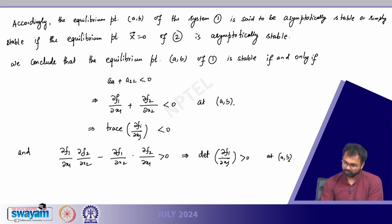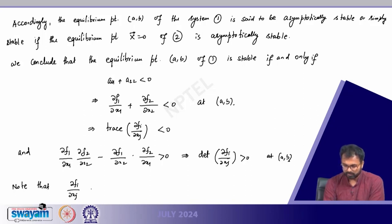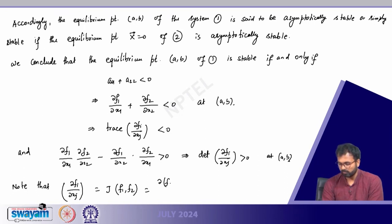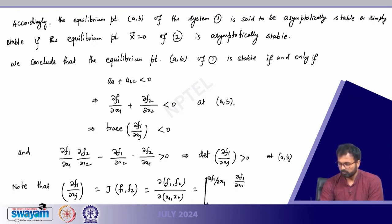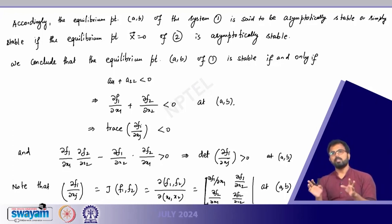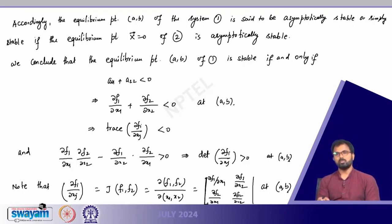Note that the matrix [∂fi/∂xj] is the Jacobian of (f1, f2) with respect to (x1, x2), which is the matrix with entries ∂f1/∂x1, ∂f1/∂x2, ∂f2/∂x1, ∂f2/∂x2, evaluated at (a, b). For any linear or nonlinear system, compute the Jacobian at the equilibrium point and check these two criteria: if both are satisfied, the solution is stable; otherwise unstable.